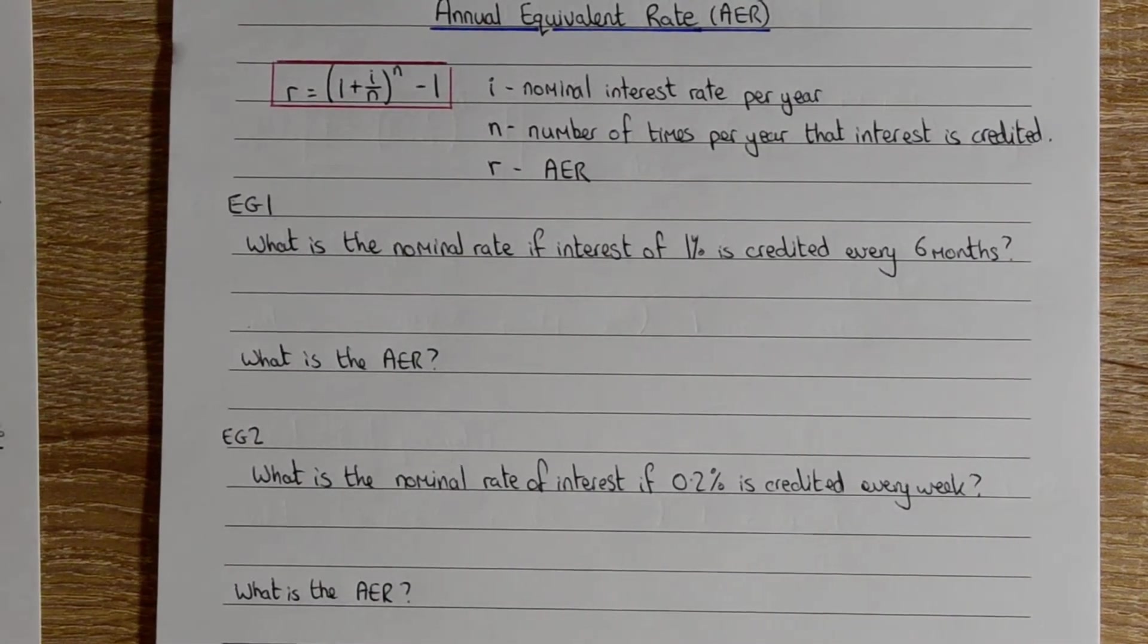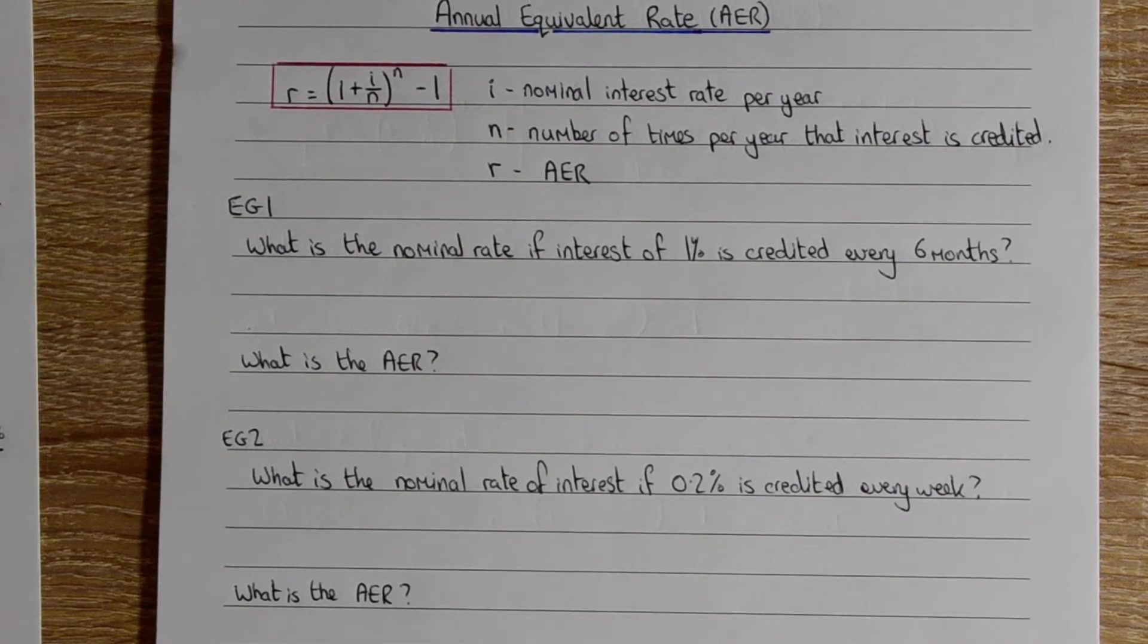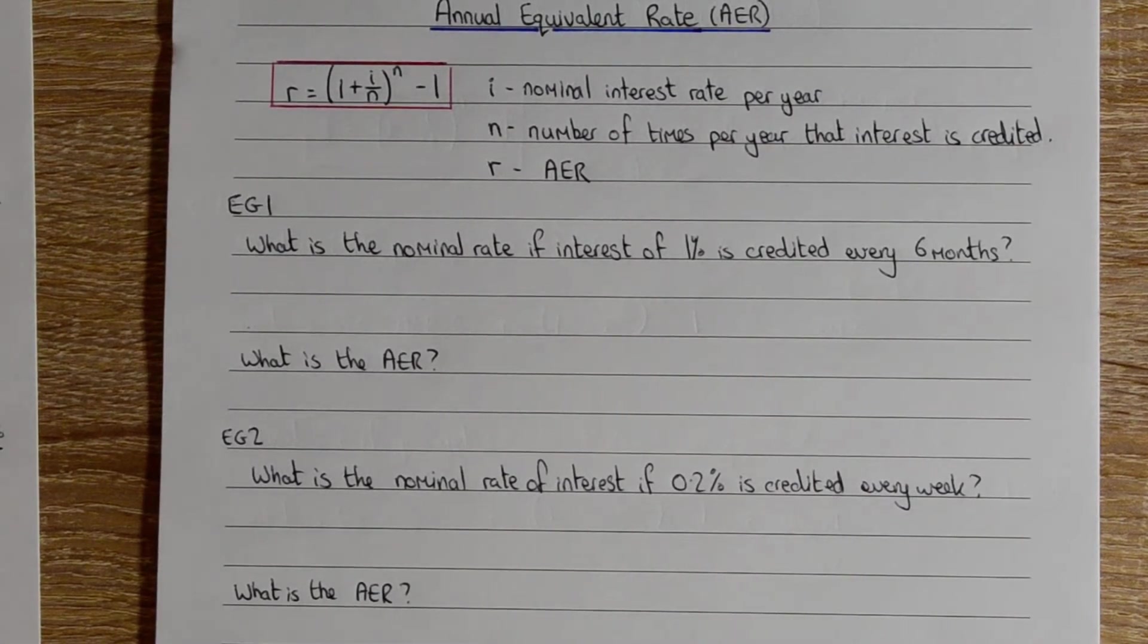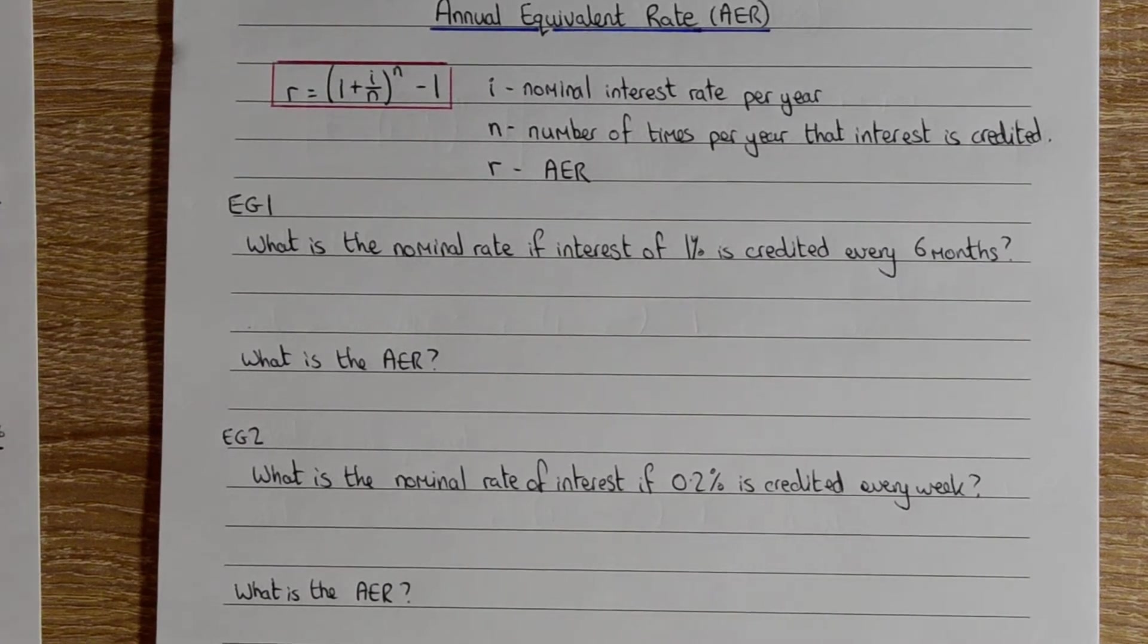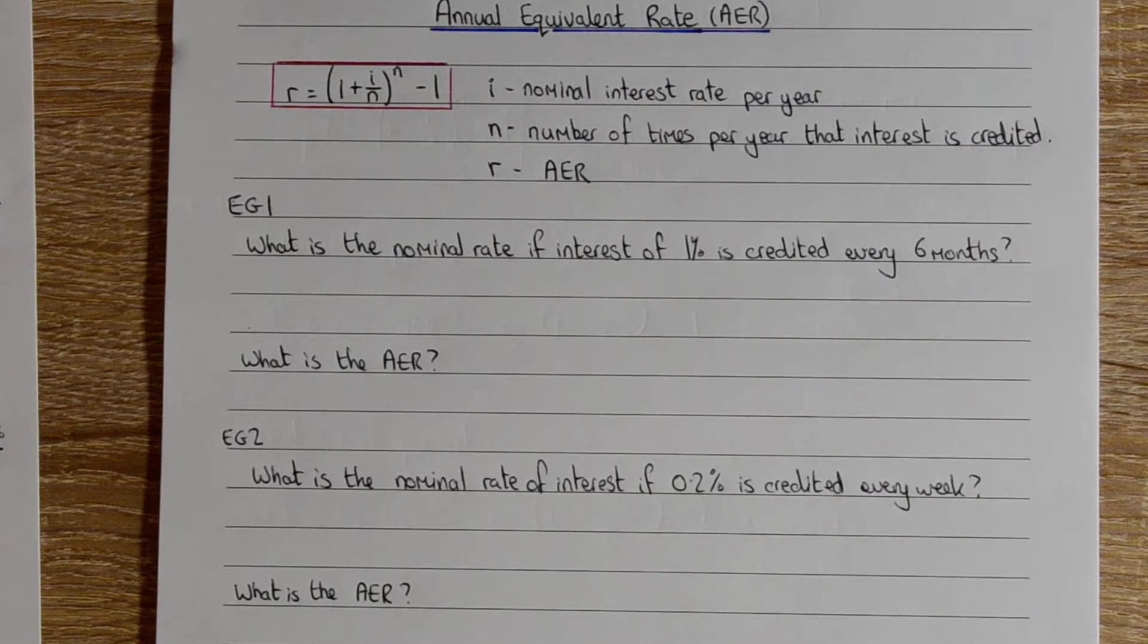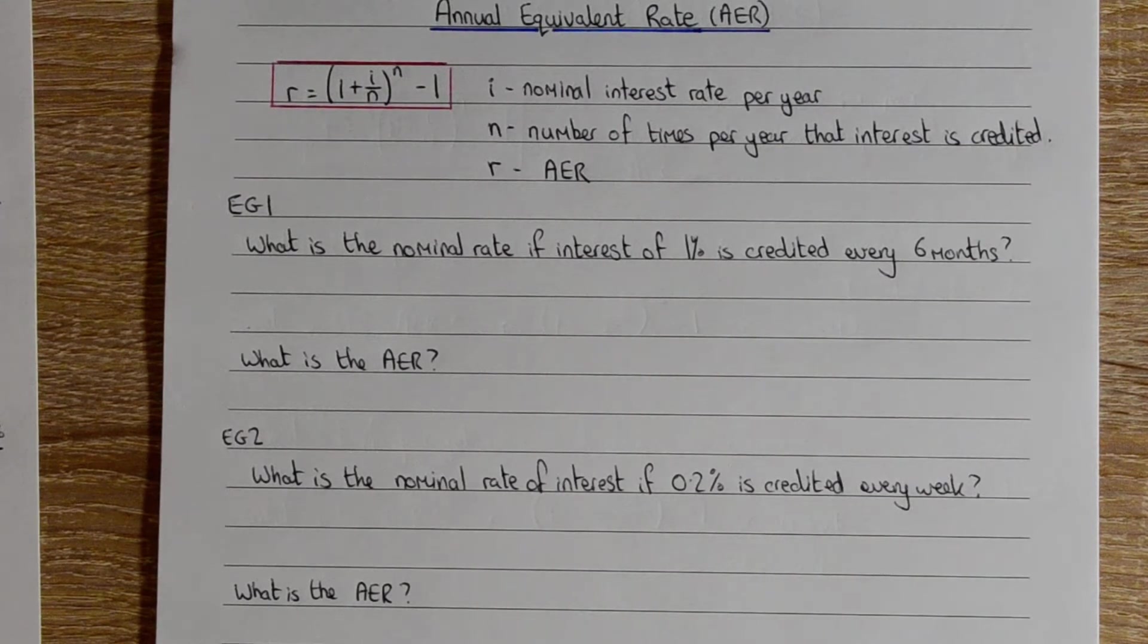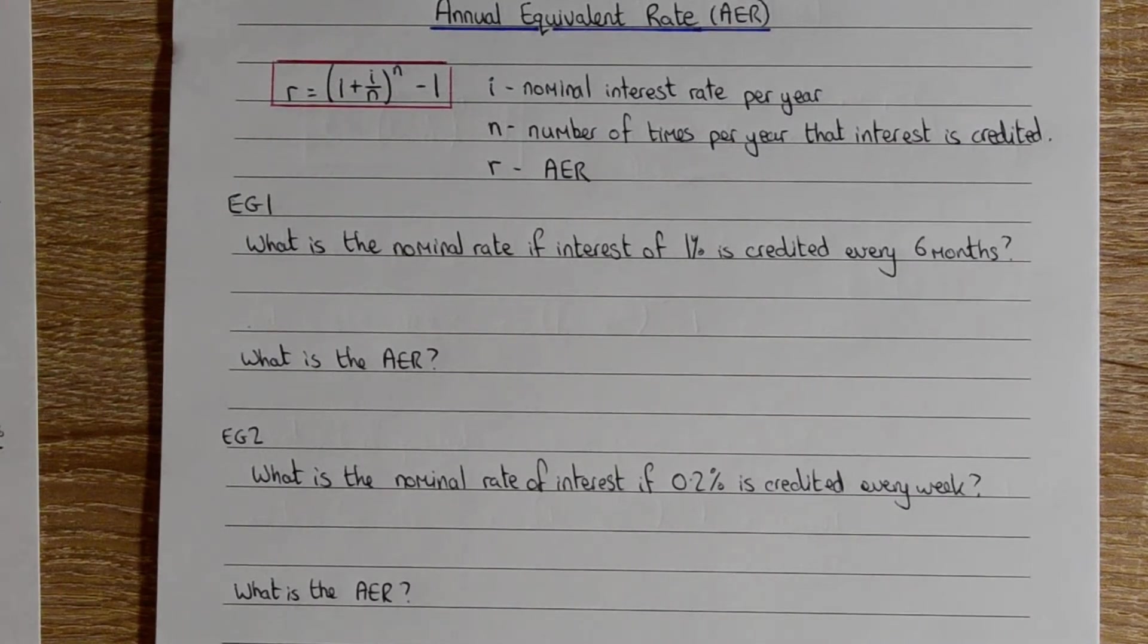I'm going to go over what annual equivalent rate calculations are like. Before we do this, you need to be familiar with working between decimals and percentages. What is 13% as a decimal, or what is 0.05 as a percentage? If you're happy with that, then we can have a look at this.